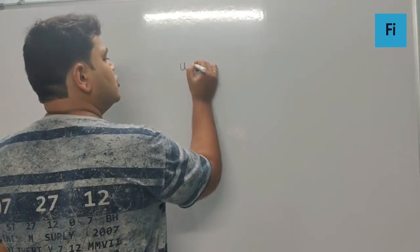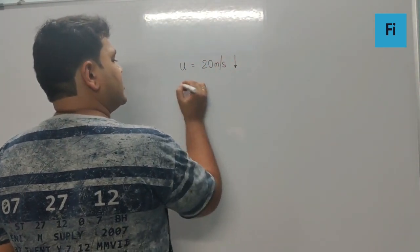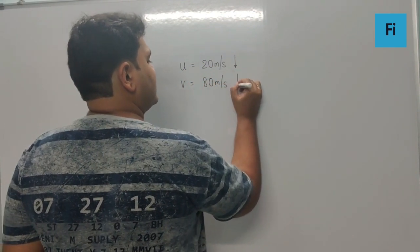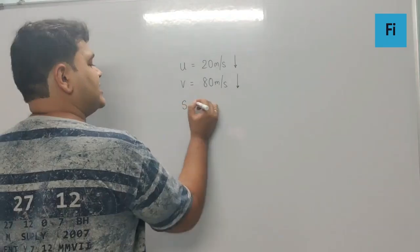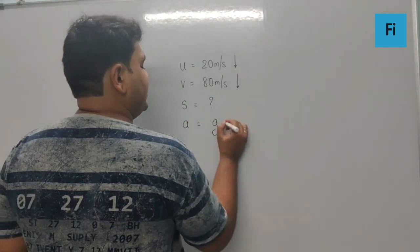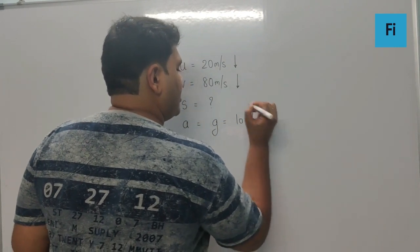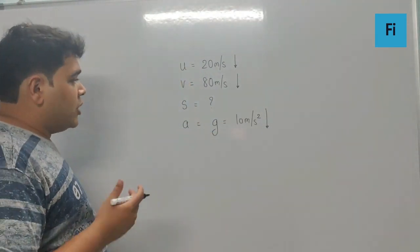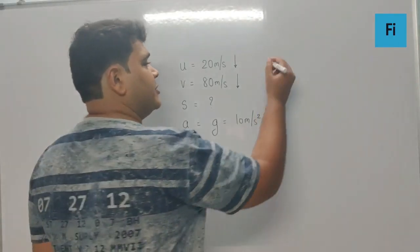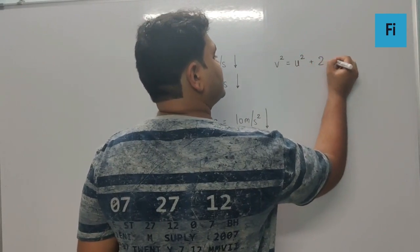Guys, we can say U is 20 meter per second downwards. V is 80 meter per second downwards. S is unknown, and acceleration is g which is going to be 10 meter per second square downwards. I think we should use a kinematical equation which should give all these variables. It should be V square is equal to U square plus 2AS.